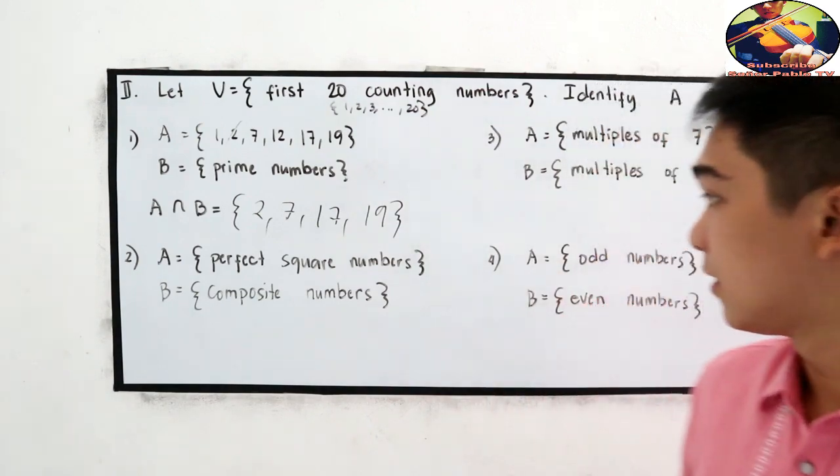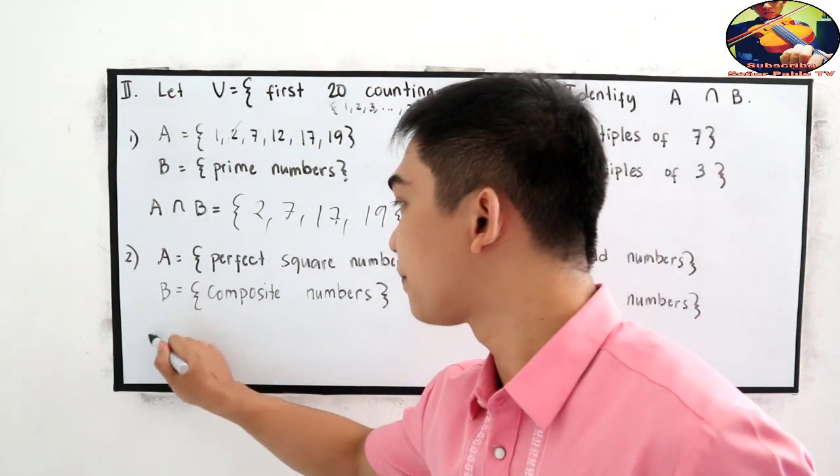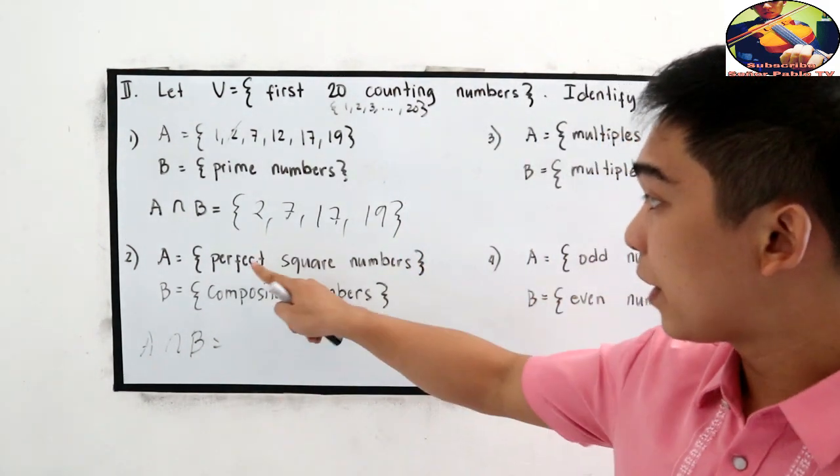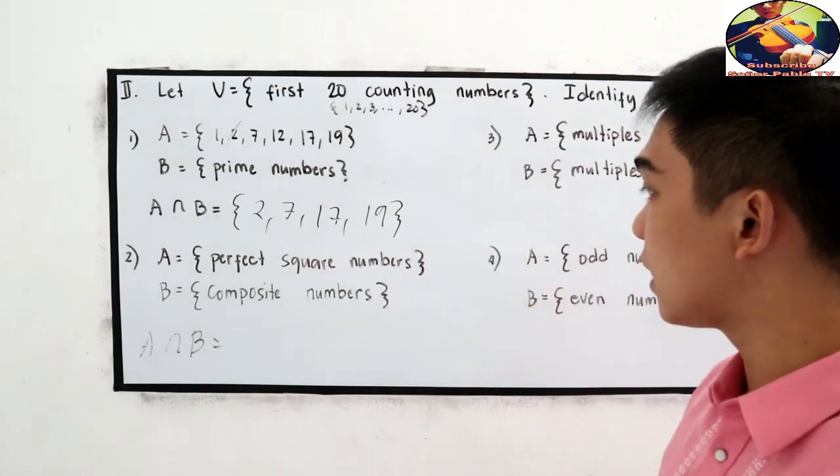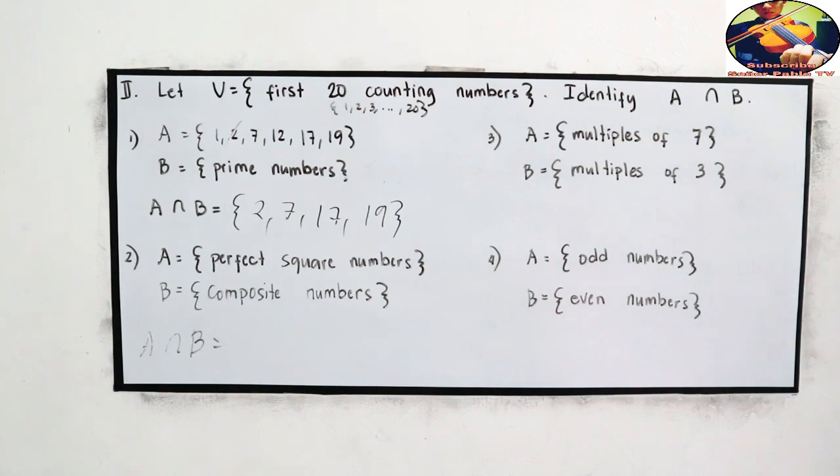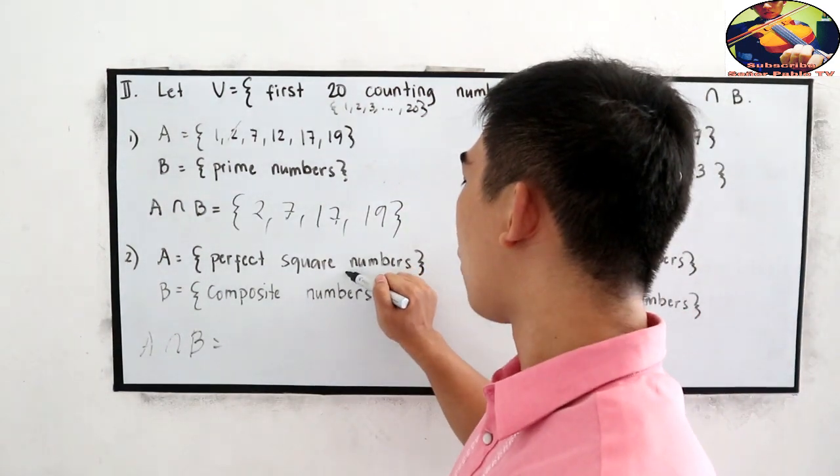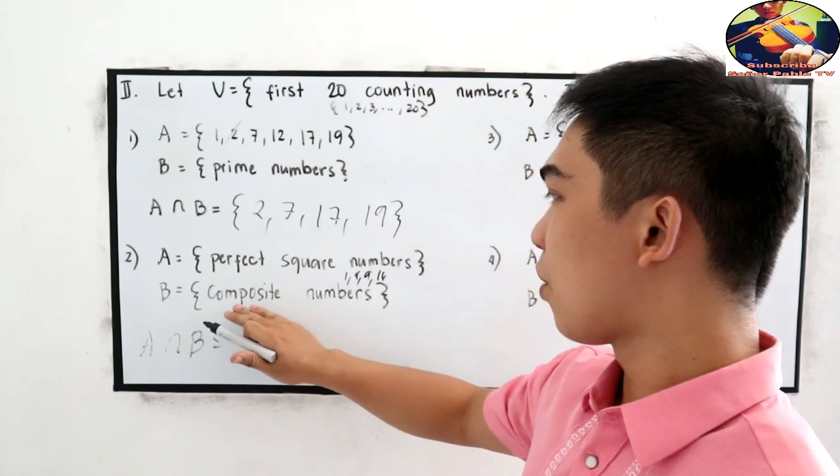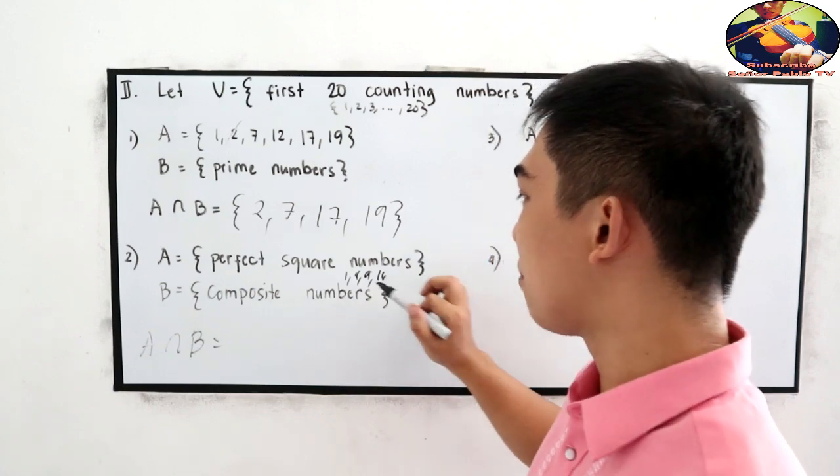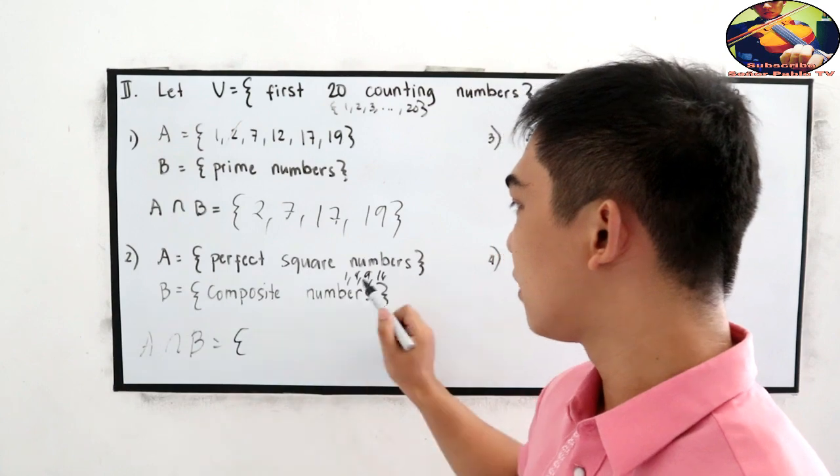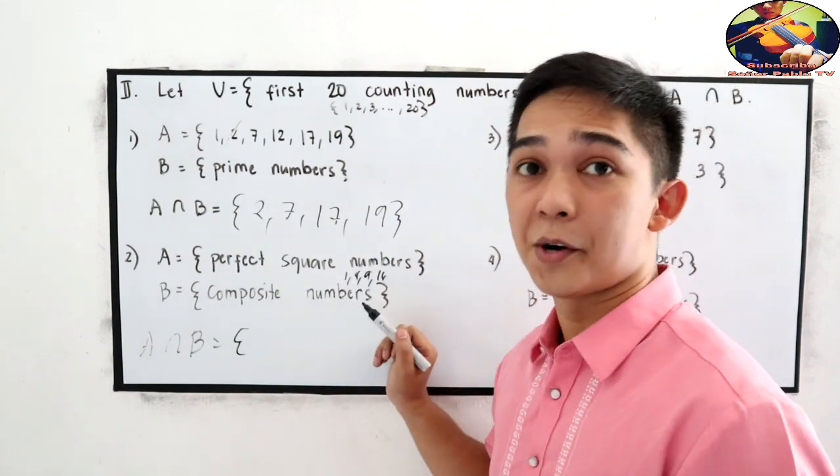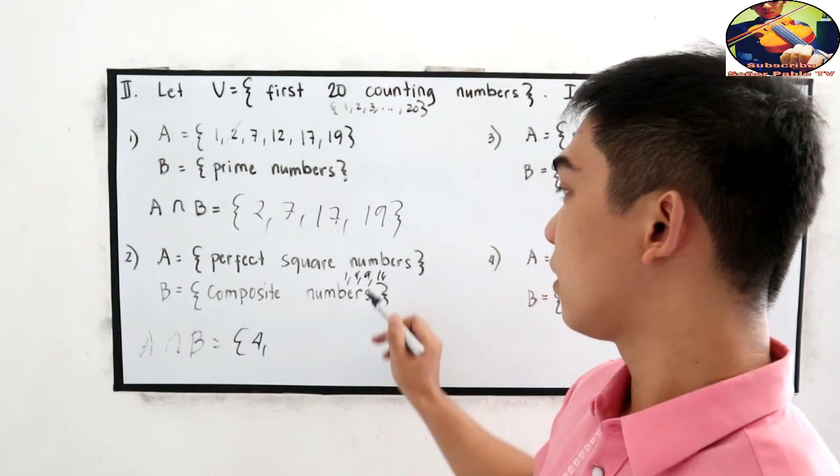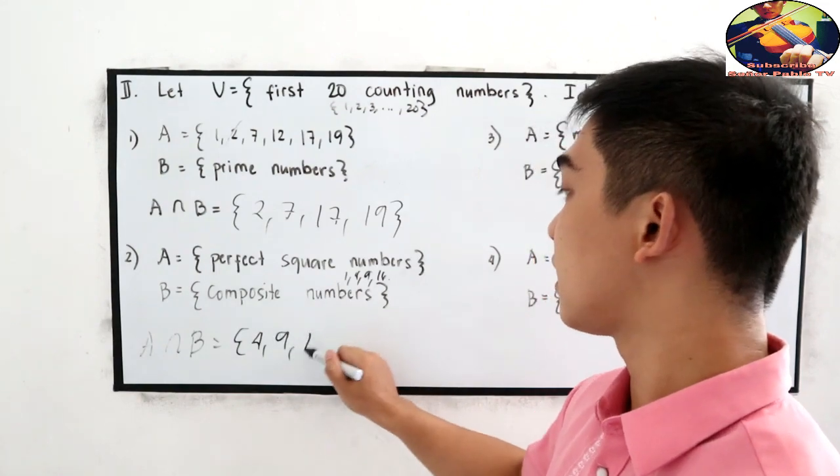Hope that you get that. Next, A intersection B. Perfect square numbers. So, from 1 to 20, our perfect square numbers are 1, 4, 9, 16. Composite number. So, what are the composite numbers in 1, 4, 9, 16? So, we have 1 is not a composite number. Next, 4. Yes, 4 is a composite number. 9, composite number. And 16, composite number.